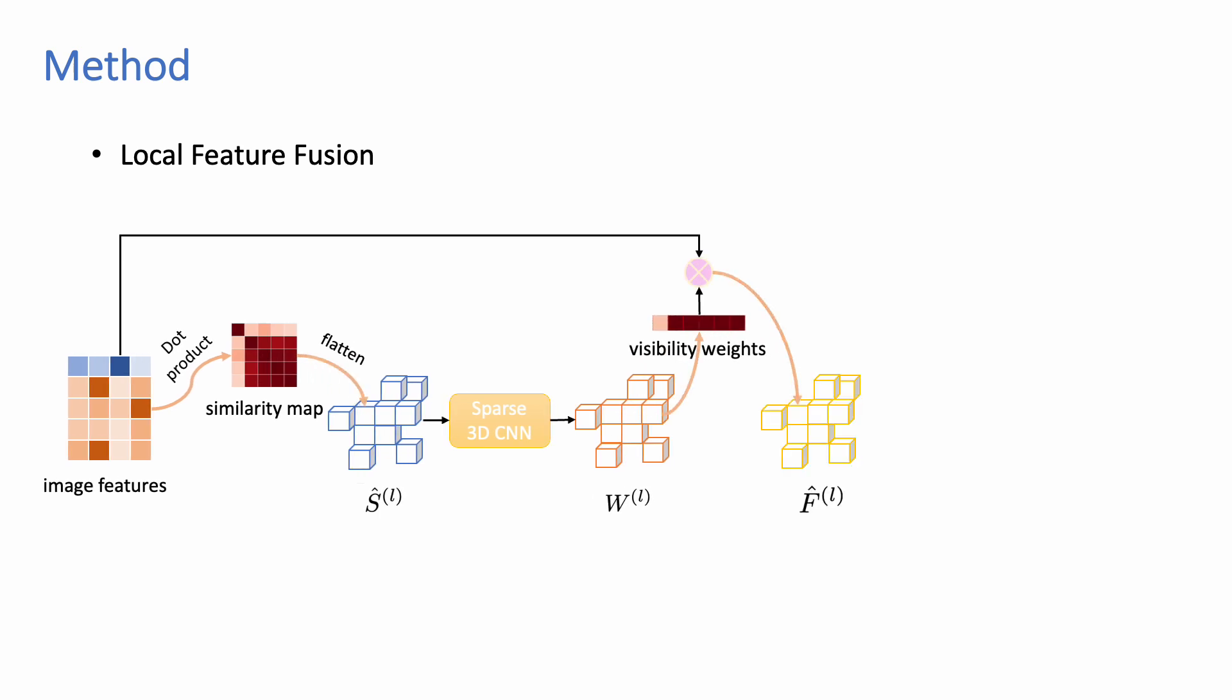The multi-view features are aggregated by these visibility weights, and then fed into another 3D CNN followed by an MLP to obtain the local occupancy and TSDF for our ray-based sparsification.